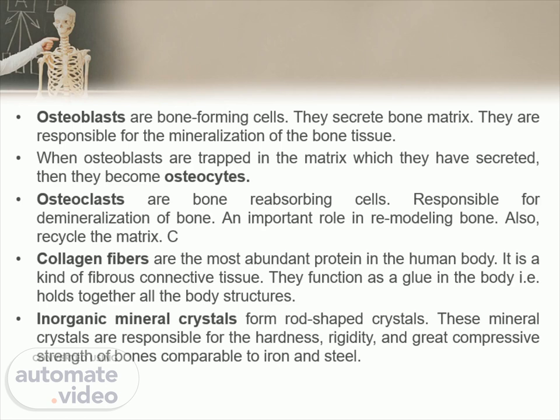Osteoclasts play an important role in remodeling bone and also recycle the matrix. Collagen fibers are the most abundant protein in the human body — a kind of fibrous connective tissue that functions as a glue, holding together all body structures. Inorganic mineral crystals form rod-shaped crystals responsible for the hardness, rigidity, and great compressive strength of bones, comparable to iron and steel.